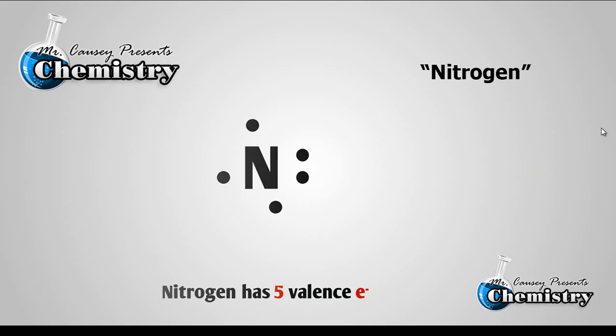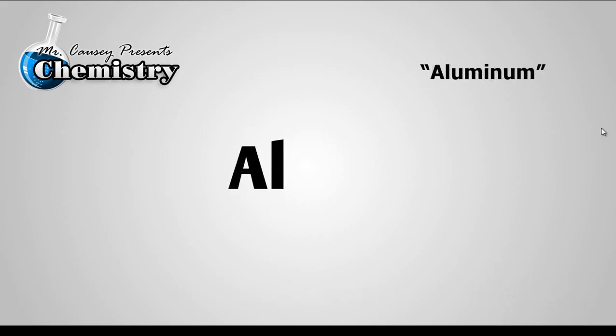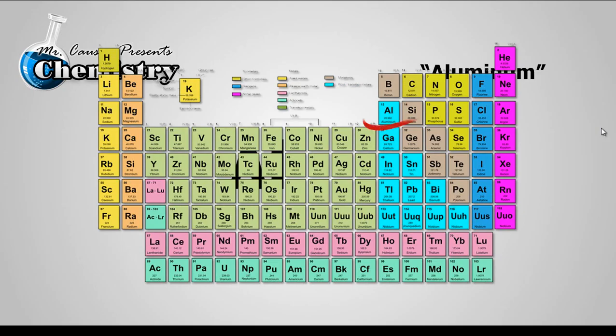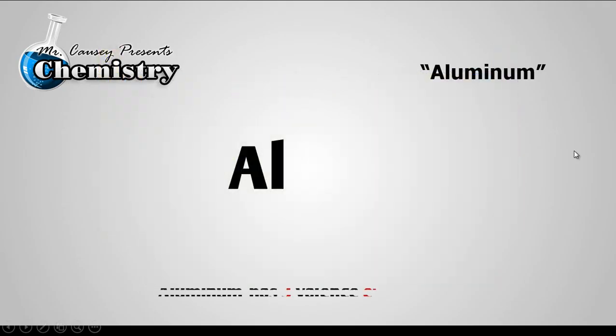Let's look at another one. Aluminum. Write down the symbol. Go to the periodic table. Find aluminum. There it is. It's number thirteen. And look. One, two, three. That means it has three valence electrons. So let's put them down. One, two, three.